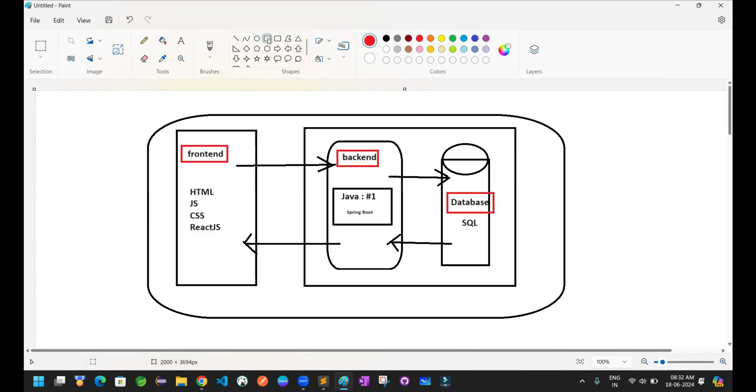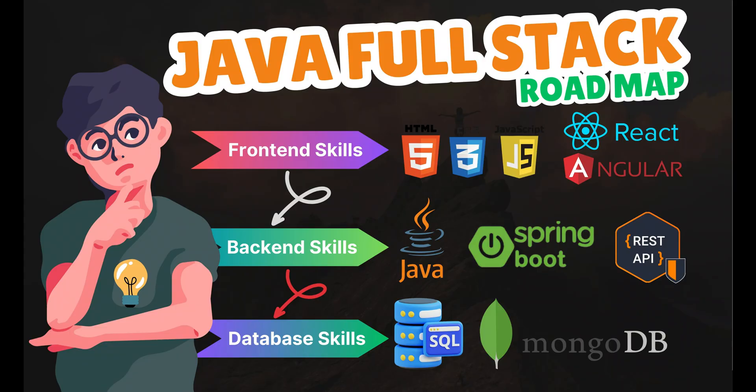With respect to the technology stack for Java full stack: HTML, CSS, JavaScript, and ReactJS are what you should know for the frontend. Similarly, Java and the Spring Boot framework as well as database knowledge — then you are calling yourself a Java full stack developer.